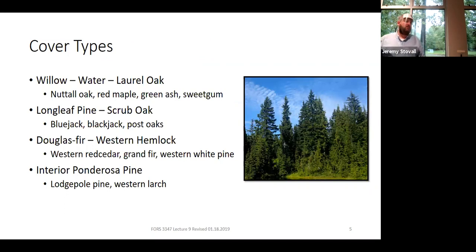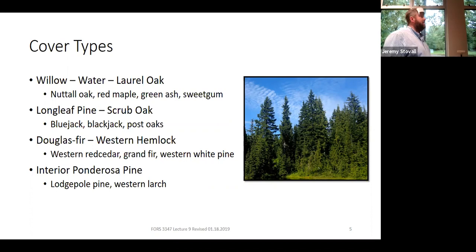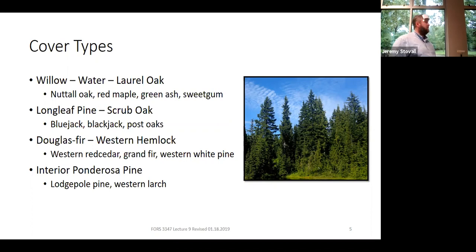Here are the four different cover types. The top two are probably familiar: willow, water, laurel oak with some minor species — a very common bottomland cover type around here. Longleaf pine scrub oak — that xeric composition we saw in Dendro lab with a lot of xeric species on ridges south of the Sam Rayburn reservoir. Out west, Douglas fir and western hemlock — California, Oregon, Washington — with western red cedar, grand fir, and western white pine. And then interior ponderosa pine, lodgepole pine, and western larch from the Rocky Mountain area.